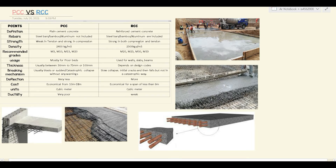Concrete is strong in compression and steel bars are strong in tension, so in the case of RCC it's a combination of strength — strong in both compression and tension. For density, PCC has 2,400 kg per cubic meter, meaning a 1m × 1m × 1m cube weighs 2,400 kg. For RCC it's 2,500 kg per cubic meter — very close, roughly 2,400 and 2,500.